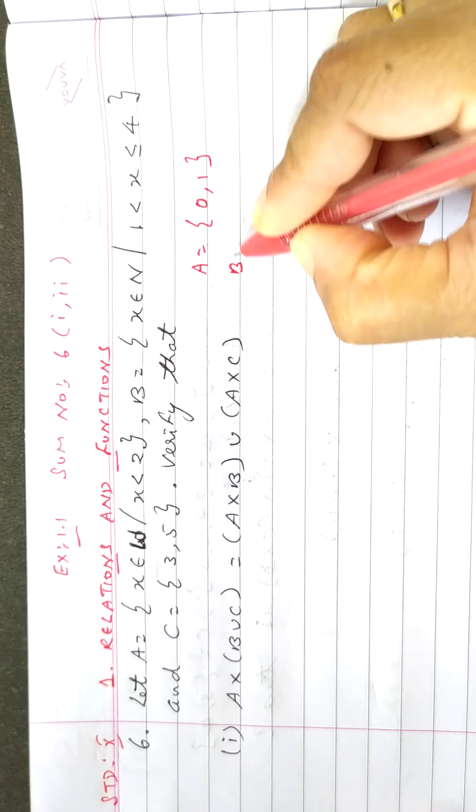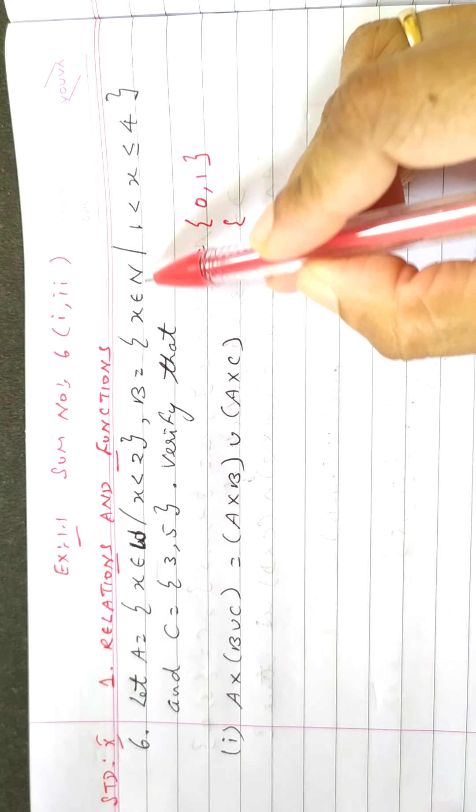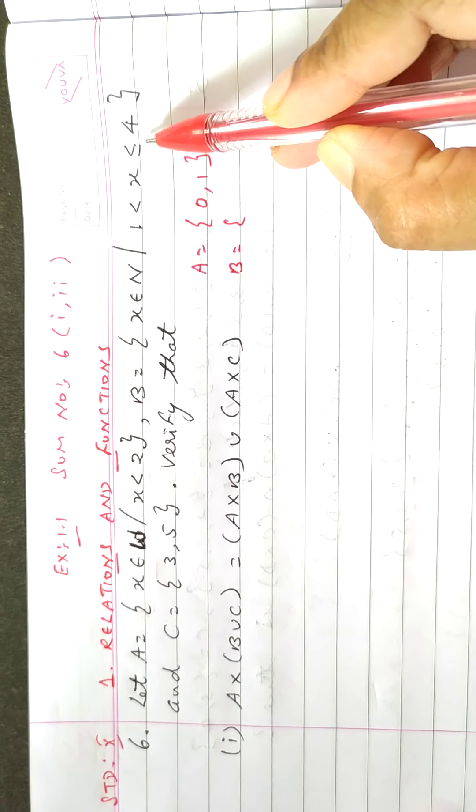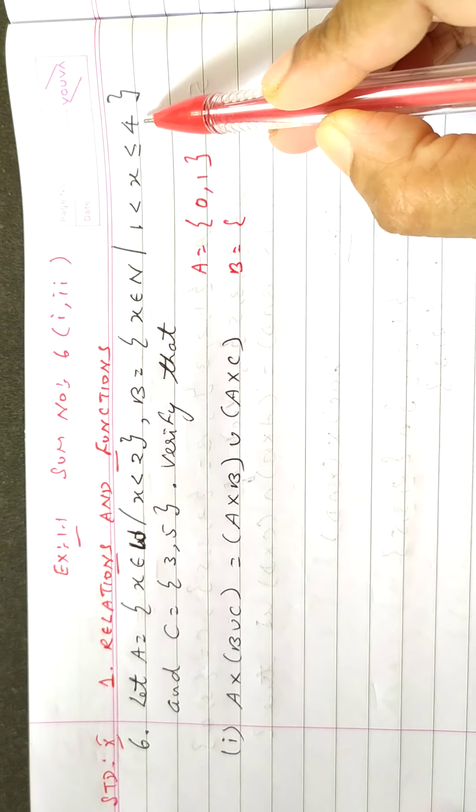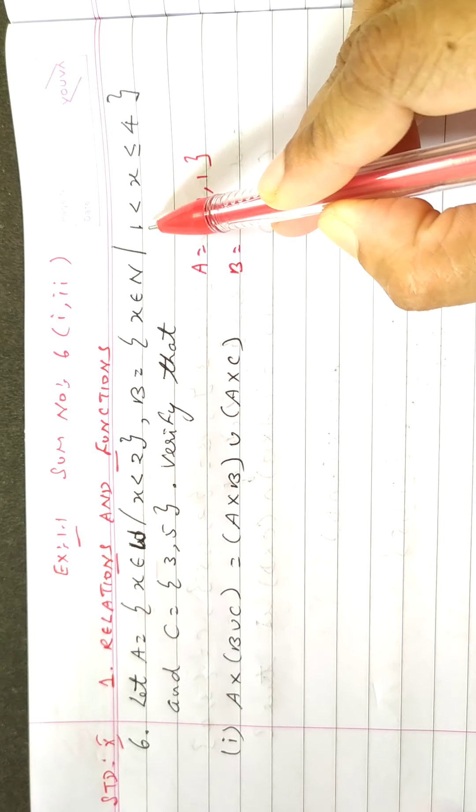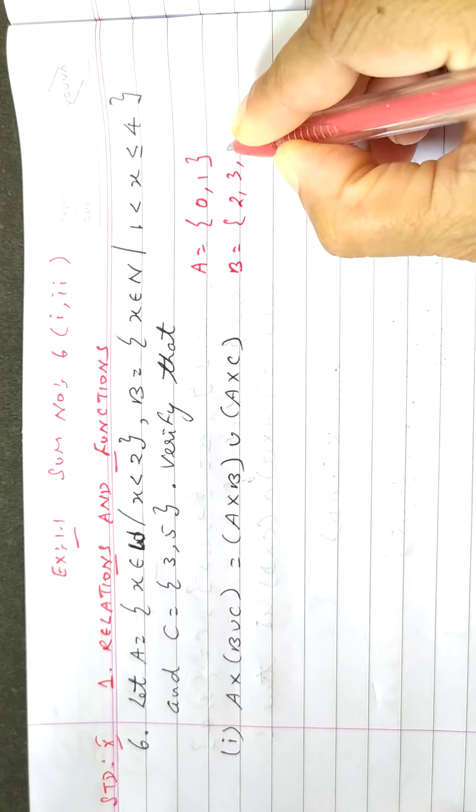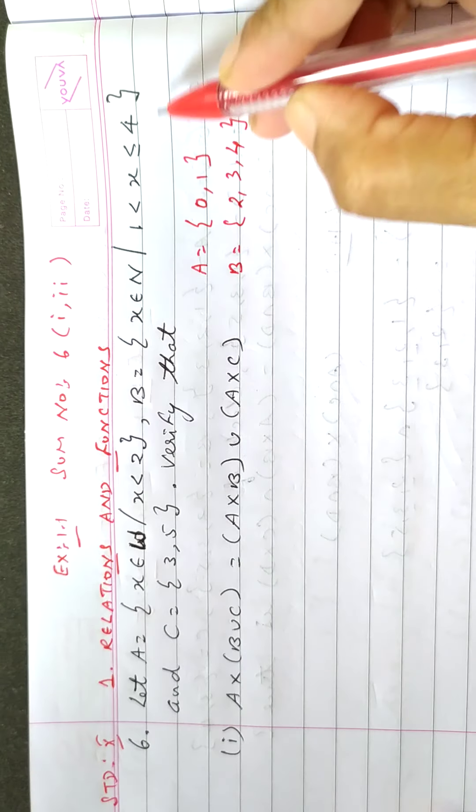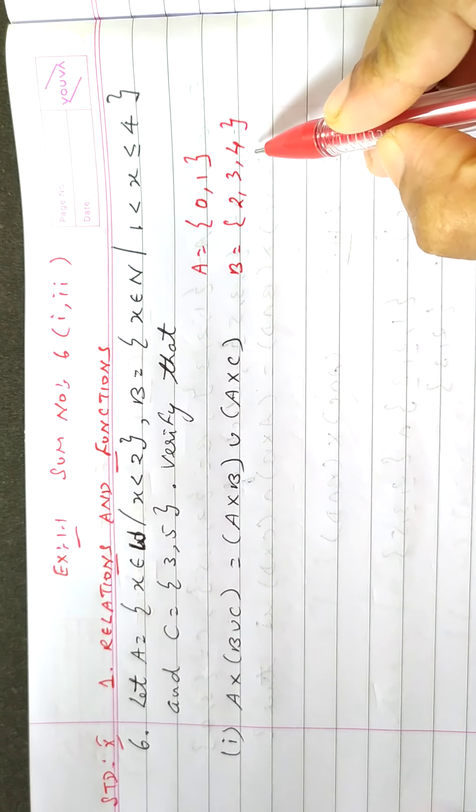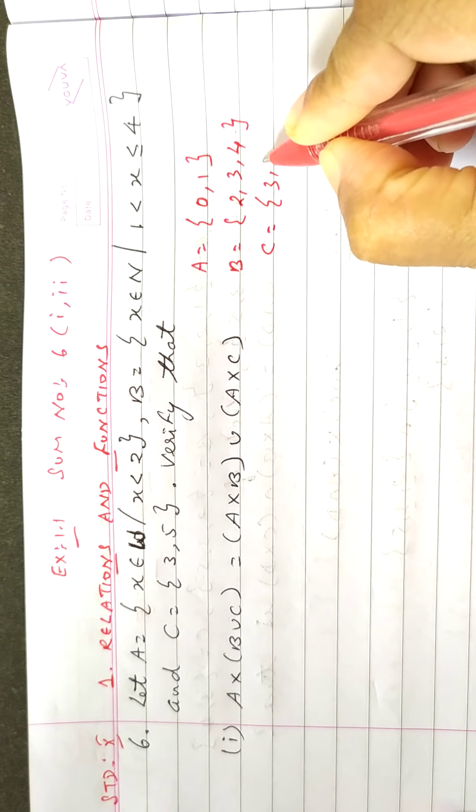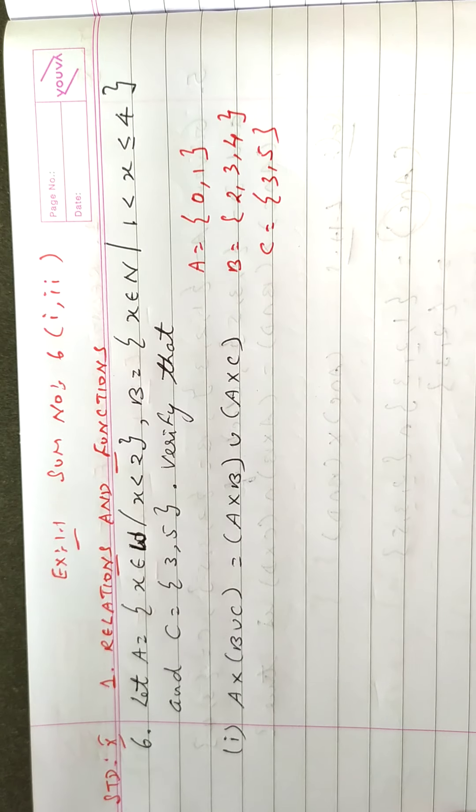Now, you go for the next set that is B. They give x belongs to natural number x is greater than 1 but less than or equal to 4. Greater than 1, so you will get 2, 3, 4. Now, set C is 3, 5. So these are the sets.